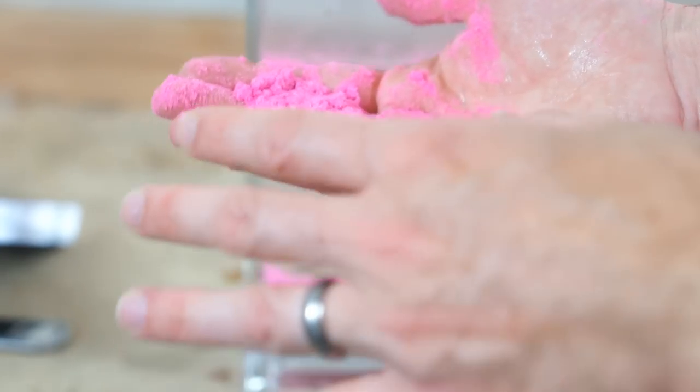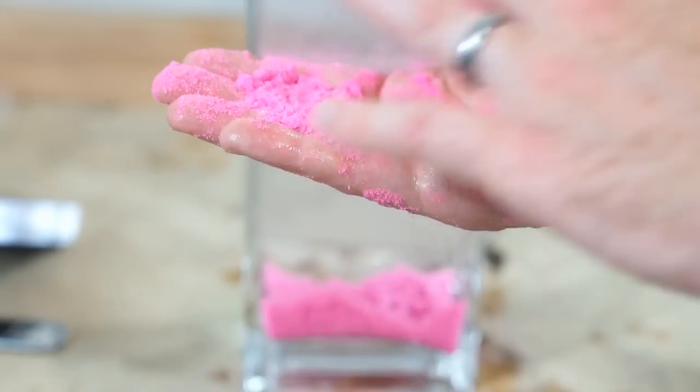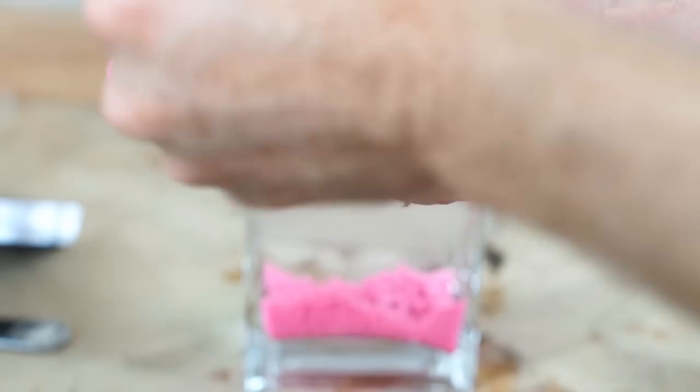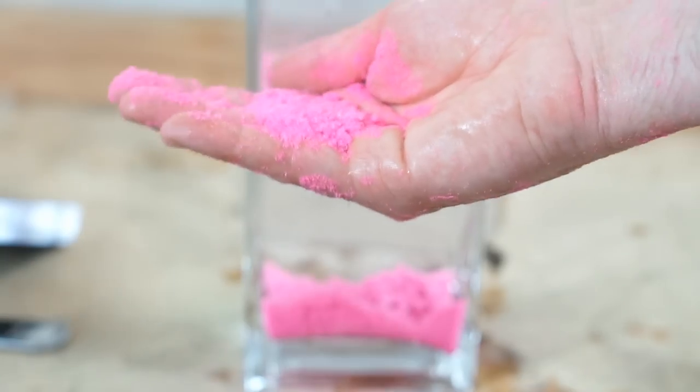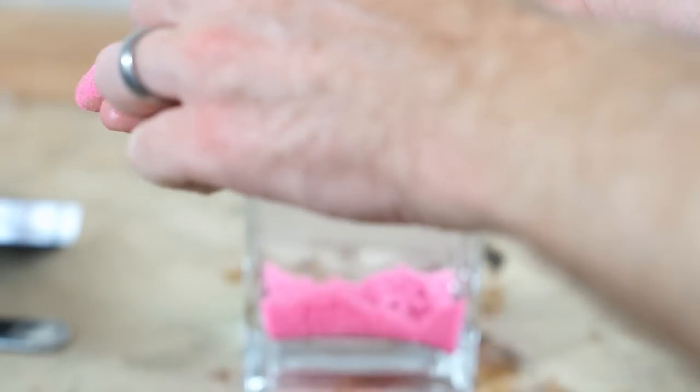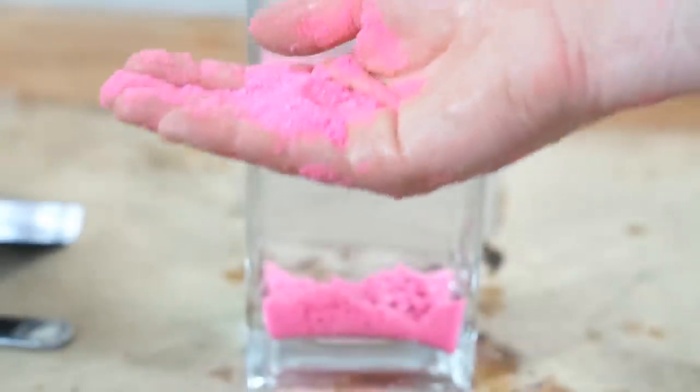So really what's keeping the water off of the hydrophobic sand is that pocket of air around it. As soon as you remove that, even though the sand still wants to repel the water, there's nothing that can be in between there. And so the water wets the sand. But as soon as you take it out of the water and expose it to air, then that layer of air can get in between there again. And it can coat the sand so the water can't get in between there.